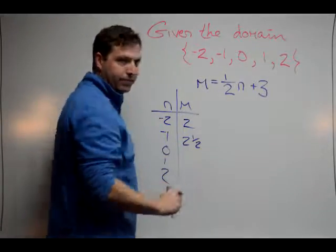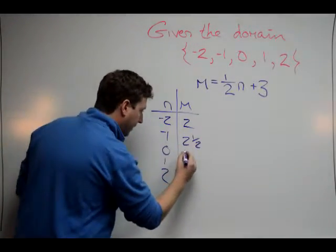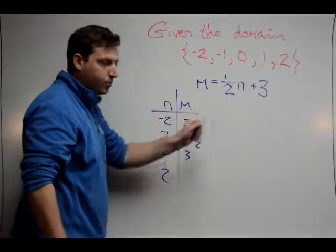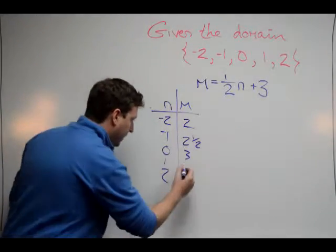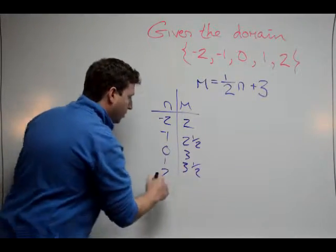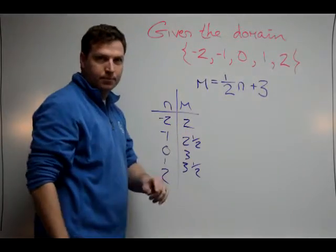0 times 1 half is 0, plus 3 gives me a 3. 1 times 1 half is 1 half plus 3, 3 and a half. 2 times 1 half is 1 plus 3, we're going to end up with 4 on this one.